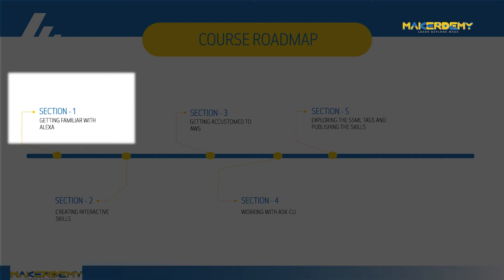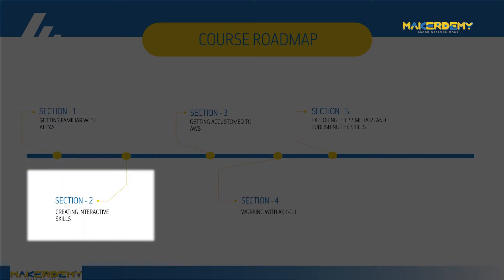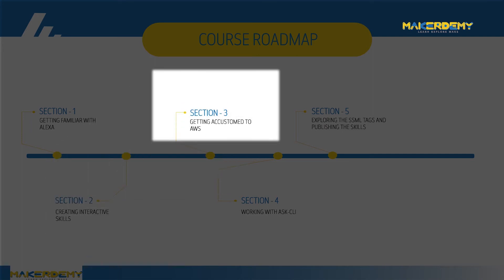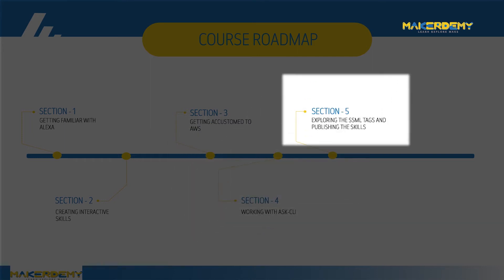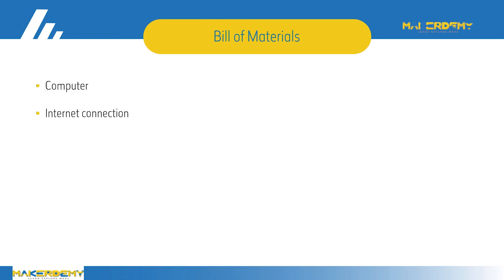Let us look at the course roadmap. We will first familiarize ourselves with Alexa. Next we will begin creating interactive skills. After that we will get accustomed to AWS. Then we will learn to work with ASK CLI. And finally we will learn about SSML tags and we will also learn to publish our skills.